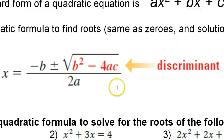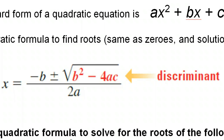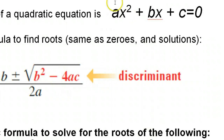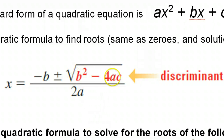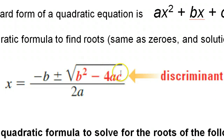Remember, here's the quadratic formula, and we can use this to solve equations that are in standard form. The b squared minus 4ac part — that is called the discriminant, and it helps us to know ahead of time how many solutions there will be, and whether they will be real or imaginary.